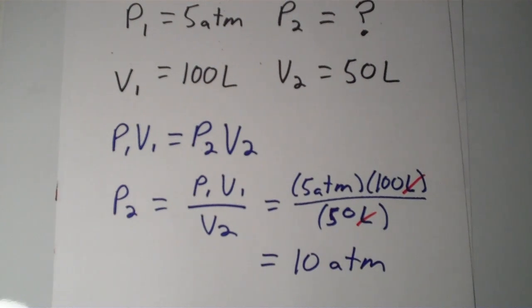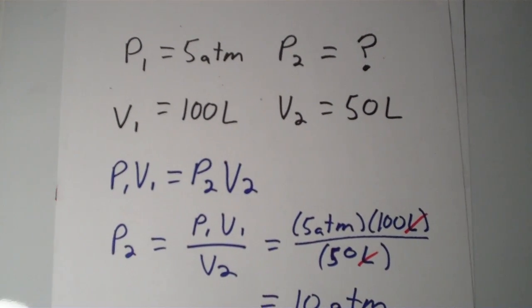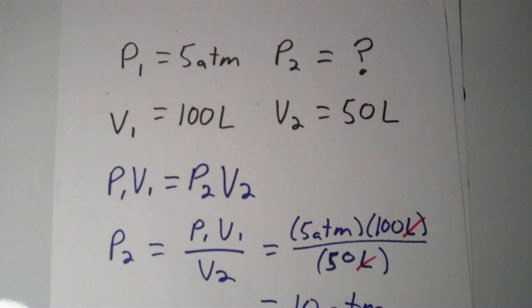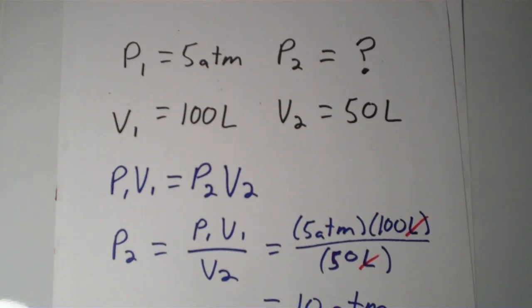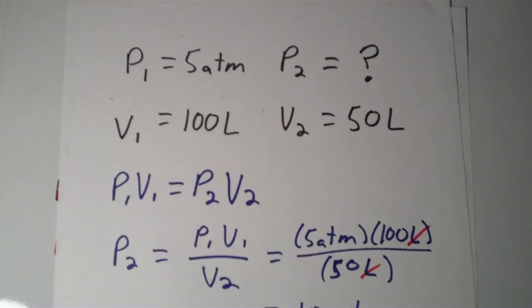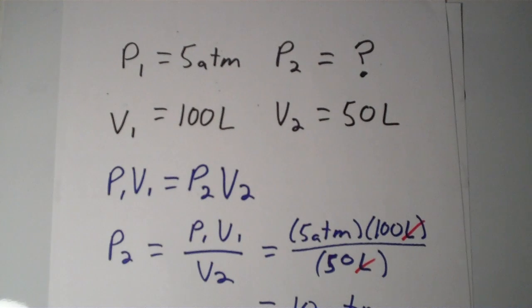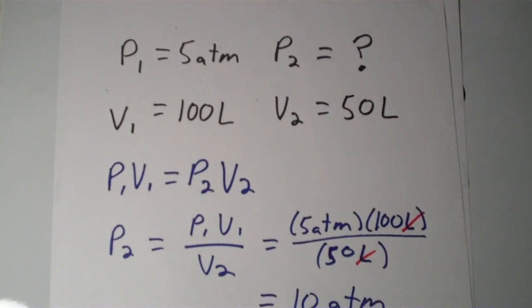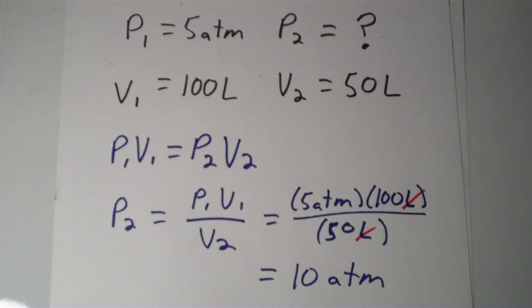So in other words, if I have a pressure of 5 atmospheres and a volume of 100 liters, if I were to decrease that volume down to 50 liters, then the new pressure of the gas would double, would increase to 10 atmospheres. So they are inversely proportional, so this equation sort of makes sense.